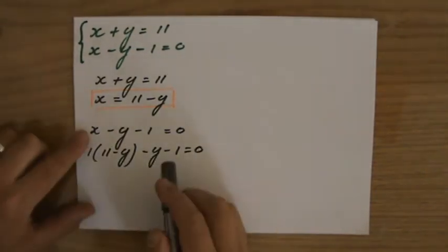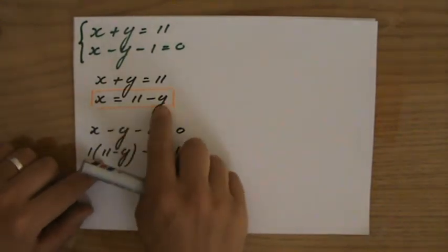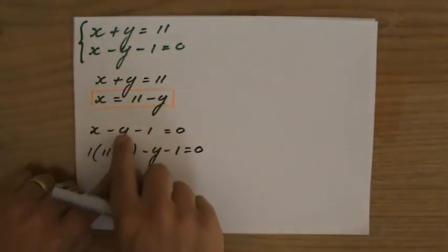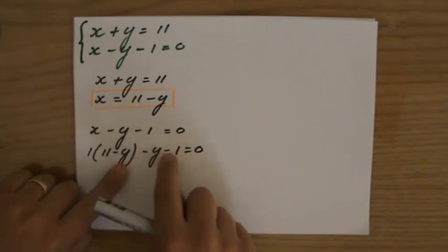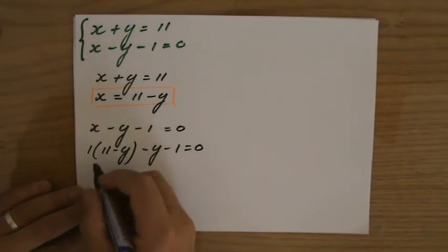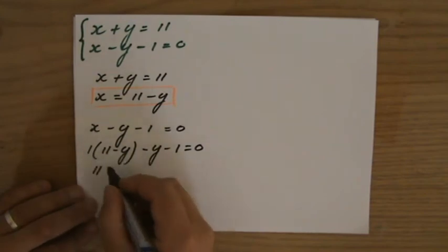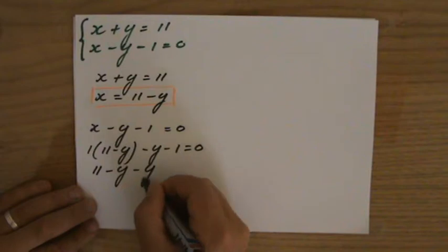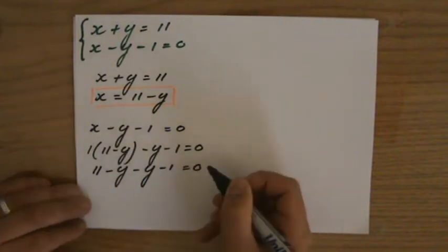So, the 1x becomes 1 times 11 minus y. Then, I continue the equation. Minus y minus 1 equals 0. And now, I can work this out. 1 times 11 is 11. 1 times minus y minus y minus y minus 1 equals 0.